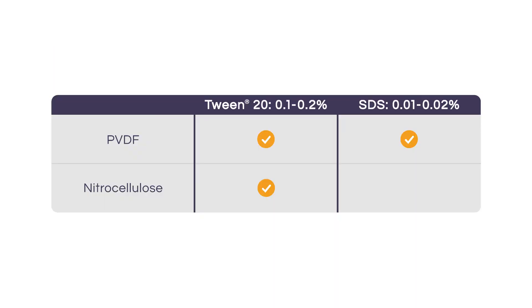If you're using PVDF membranes, in addition to having between 0.01 and 0.02% Tween 20, you also want to add between 0.01 and 0.02% SDS. That's going to increase the specificity of the antibody and reduce background.